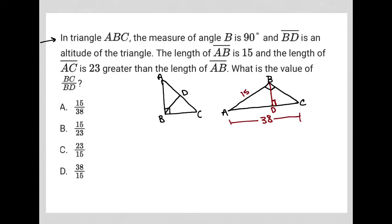What is the value of BC over BD? All right. So BC, this, I'll just outline in green. So this line here in green over BD, which is our altitude, which I'll just highlight in red.